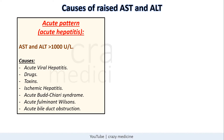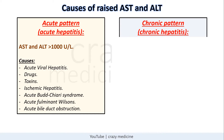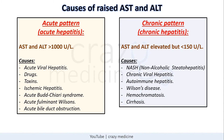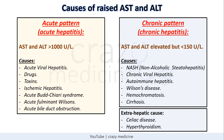In the chronic pattern (chronic hepatitis), AST and ALT are elevated but values typically do not cross 150. Causes include non-alcoholic steatohepatitis, chronic viral hepatitis (hepatitis B and C), autoimmune hepatitis, Wilson's disease, hemochromatosis, and cirrhosis. Extrahepatic conditions can also cause a minimal or chronic rise in AST and ALT — two examples to remember are celiac disease and hyperthyroidism.